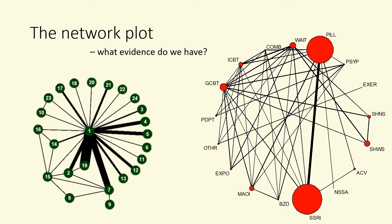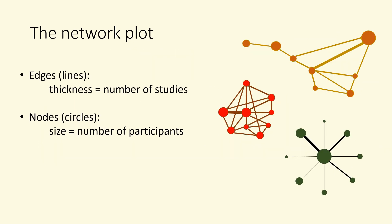Here is a network plot. The interventions are the points or circles, and where there is a line, it shows that we have trial evidence comparing those interventions directly. In many ways, this is the most important figure in a network meta-analysis because it tells you how much evidence we have, whether the evidence on each comparison is direct or indirect, reminds you how the interventions have been grouped, and alerts you to comparisons where there is little evidence. The amount of evidence on each comparison may be shown by the thickness of the line, which represents the number of studies making that comparison.